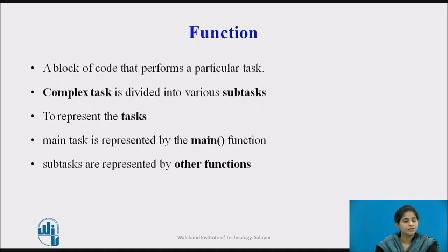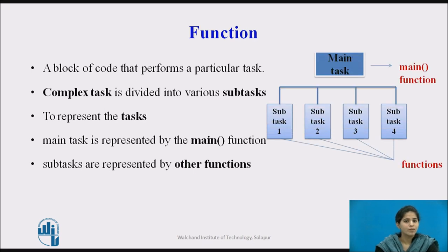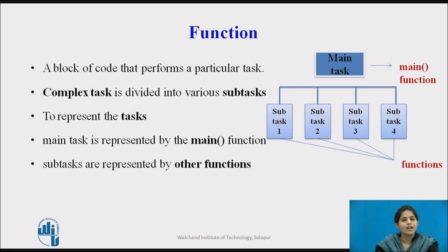Next, we see the function concept. A block of code that performs a particular task is called a function. The purpose of writing a program is to solve a given task. In programming, a complex task is generally divided into various sub-tasks. The programmer writes separate pieces of code called functions to represent these sub-tasks. Generally, the main task is represented by the main function, and sub-tasks are represented by other functions. Thus, every C program is nothing but a group of functions.